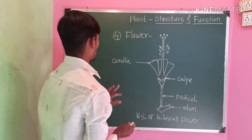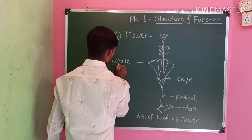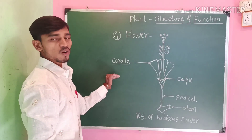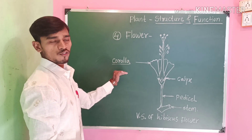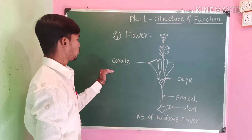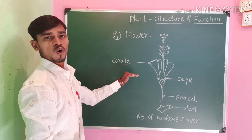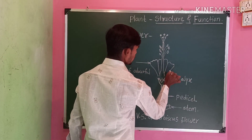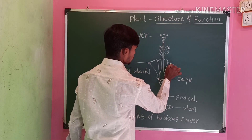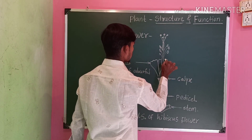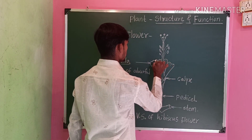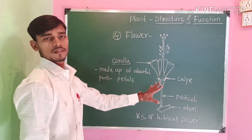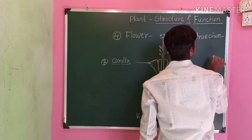Corolla is made up of colorful parts called petals. These are the petals.